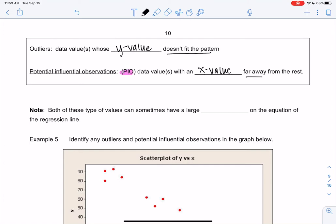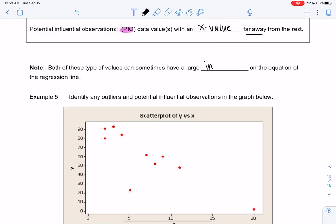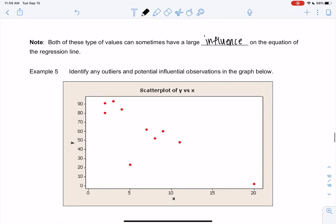So outliers don't fit a pattern. PIOs might fit the pattern, they're just far away. Okay. Both of these types of values can have a large influence on the equation. So it's important to make sure they're not errors. But if they are not errors, you probably should keep them. But let's see the difference.